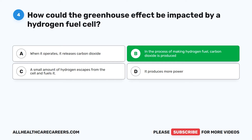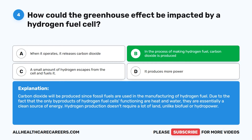The correct answer is B. In the process of making hydrogen fuel, carbon dioxide is produced. Carbon dioxide will be produced since fossil fuels are used in the manufacturing of hydrogen fuel. The only byproducts of hydrogen fuel cells functioning are heat and water, making them essentially a clean source of energy. Hydrogen production doesn't require a lot of land, unlike biofuel or hydropower.